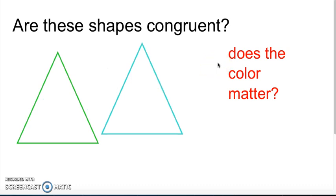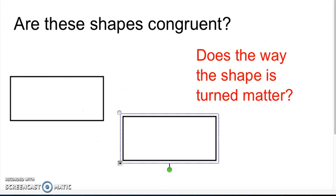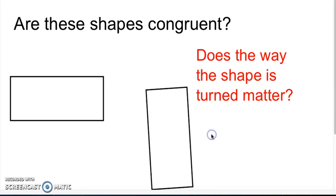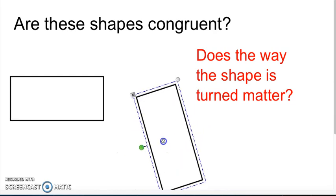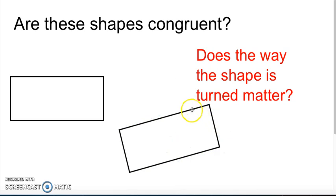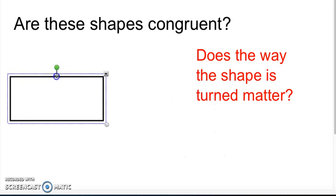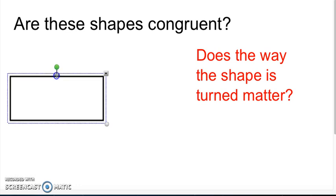Over here I ask the question: does the color matter? And no, the color does not matter when testing if two figures are similar or congruent. Are these shapes similar? Does the way the shape is turned matter? I can see that they're both rectangles, and when I rotate this shape around, I can see that it still remains a rectangle. So the orientation of this shape does not matter. Let's test this to make sure they're the same size. And indeed they are — these shapes are congruent because they're both rectangles and when I turned the rectangle around, it still remains a rectangle, making the side lengths exactly the same.